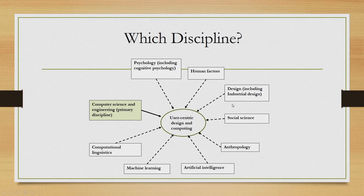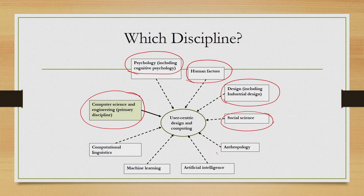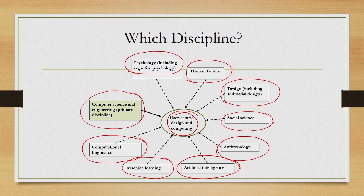What are those disciplines? There are many, but the important ones can be identified as: computer science as the primary discipline according to S.E.M. Sikkai's definition, psychology including cognitive psychology, human factors as a field in itself, design including industrial design, social science, anthropology, technology, AI, machine learning, and computational linguistics. These are only a few of all the fields that may be involved in the user-centric design field, which is the primary concern in this course.